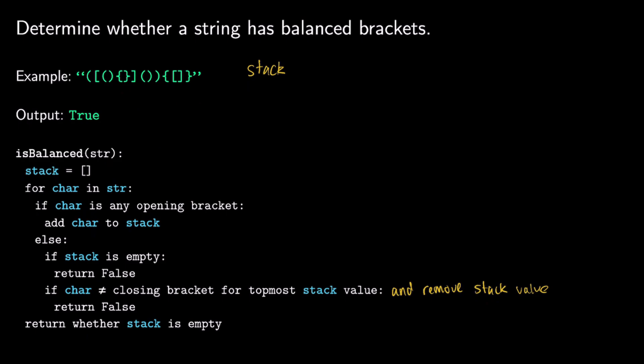Continuing with the stack empty, we add an opening curly brace, then an opening square bracket. A closing square bracket follows and corresponds to the topmost stack value, so we remove it. Finally our last character is a closing curly brace, which corresponds to the remaining opening curly brace, so we remove it. The stack is now empty. If any items remained, that would mean extra opening brackets, so the string would not be balanced — but here we return true.